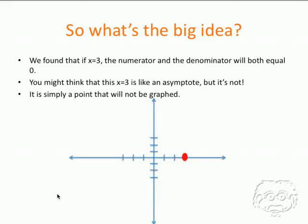So what's the big idea? We found that if x equals 3, the numerator and the denominator will both equal 0. You might think that this x equals 3 is like an asymptote, but it's not. It's simply a point that will not be graphed.